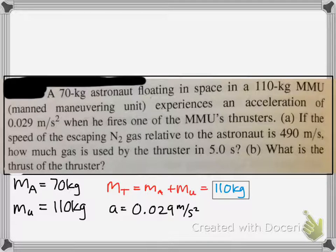Then, the acceleration was given to be 0.029 meters per second squared. And, the velocity relative to the astronaut, so we're in a moving reference frame, is 490 meters per second.